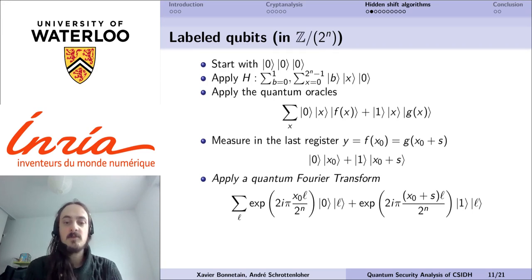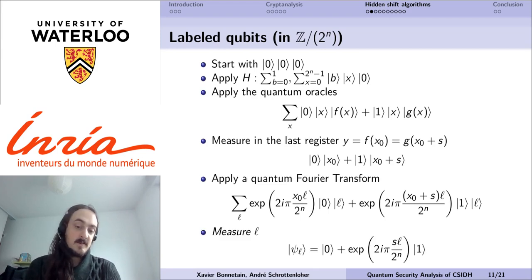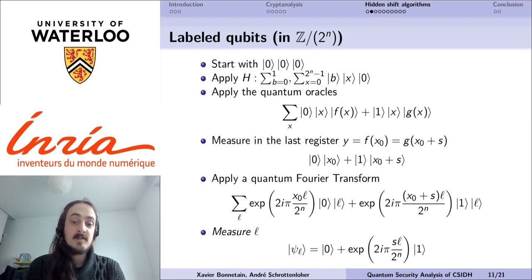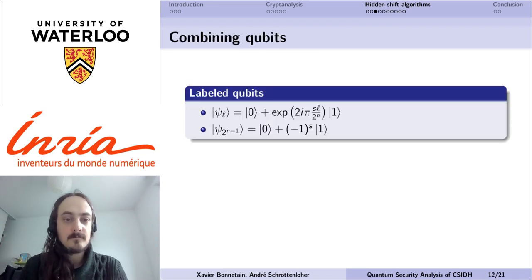From this superposition, we apply a quantum Fourier transform on the second register, which allows us to obtain a uniform superposition over L, but with different phases. If we measure this L, what we obtain is a superposition of 0 and 1 with a very specific phase shift, presented here, that only depends over L, which is classically known because we've just measured it, and s, which is the value that we want. Now, all the principles of hidden shift algorithms would be to extract this value of s given these labeled qubits.